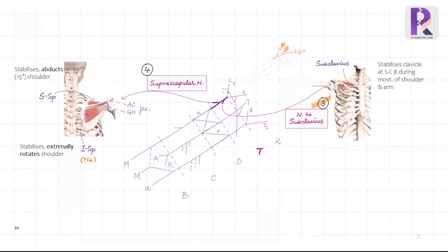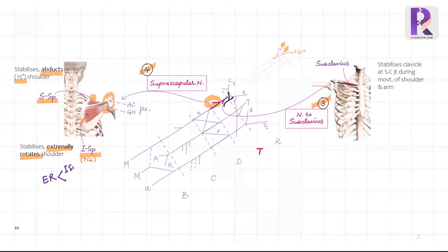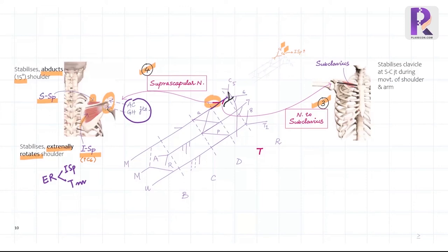Moving on to the side branches of the upper trunk: the nerve to subclavius is sometimes considered a branch from C5, C6 nerve roots rather than the upper trunk; it supplies the subclavius, which stabilizes the clavicle during shoulder and arm movement. The next side branch, the suprascapular nerve, is a mixed nerve. It supplies the supraspinatus and infraspinatus, both inserting onto the greater tubercle of the humerus. The supraspinatus initiates abduction of the shoulder — the first 15 degrees — while the infraspinatus externally rotates the shoulder. Only two other muscles aid in external rotation: teres minor and the posterior fibers of deltoid. The suprascapular nerve also supplies sensory fibers to the acromioclavicular and glenohumeral joints.